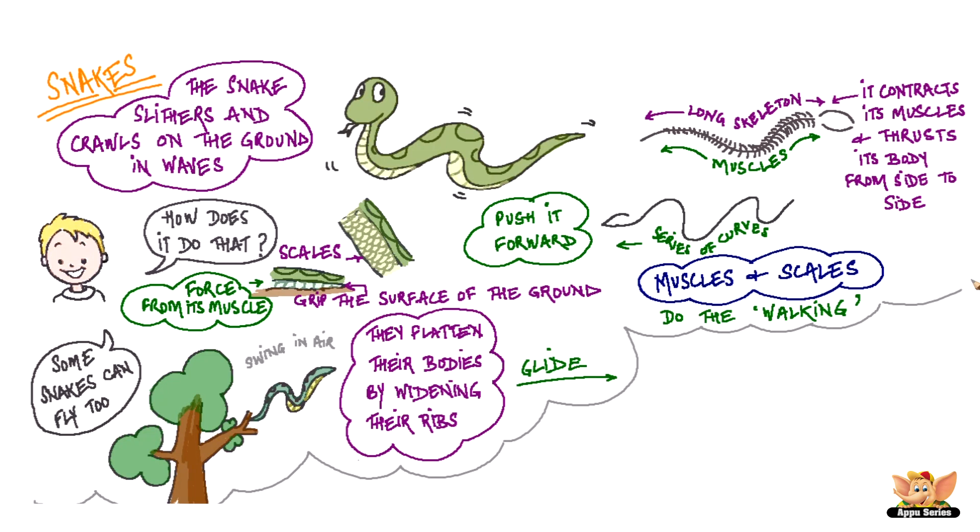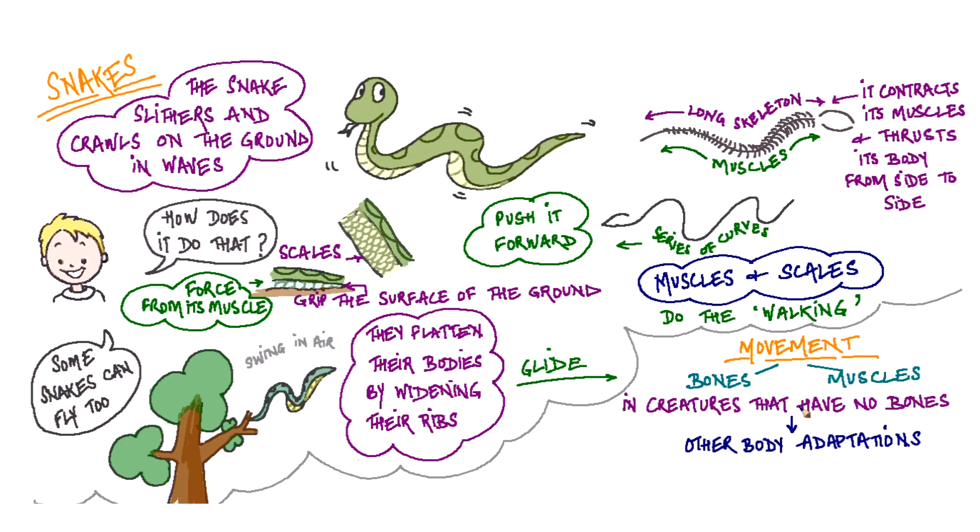So what have we learnt? We have learnt that movement by all animals and humans is made possible with the help of bones and muscles. And in creatures that do not have bones, movement is made possible by muscles and other body adaptations like scales in snakes and slimy mucus in earthworms and snails.